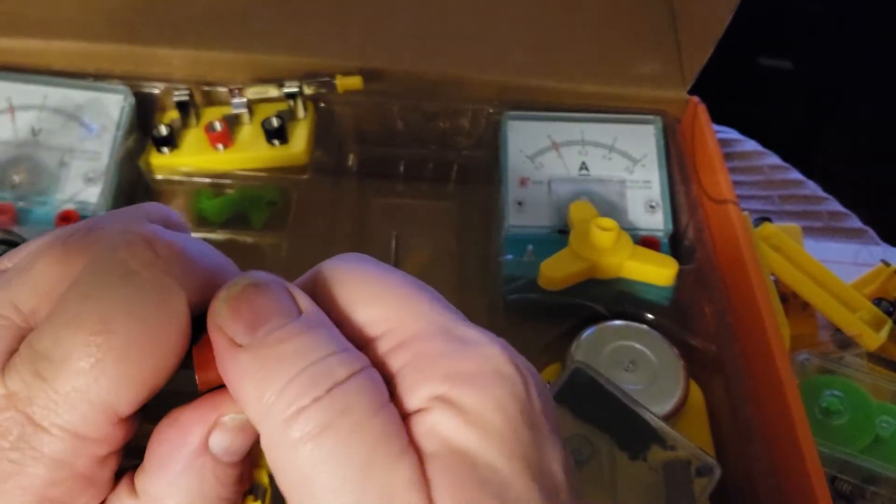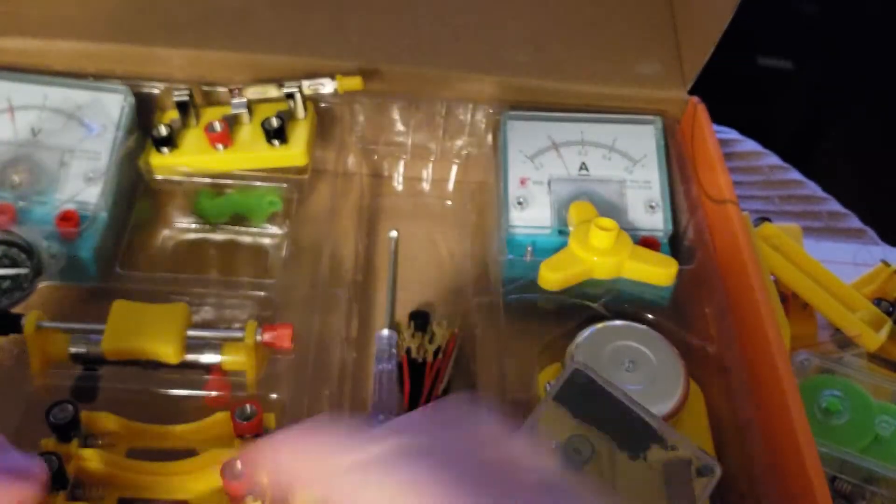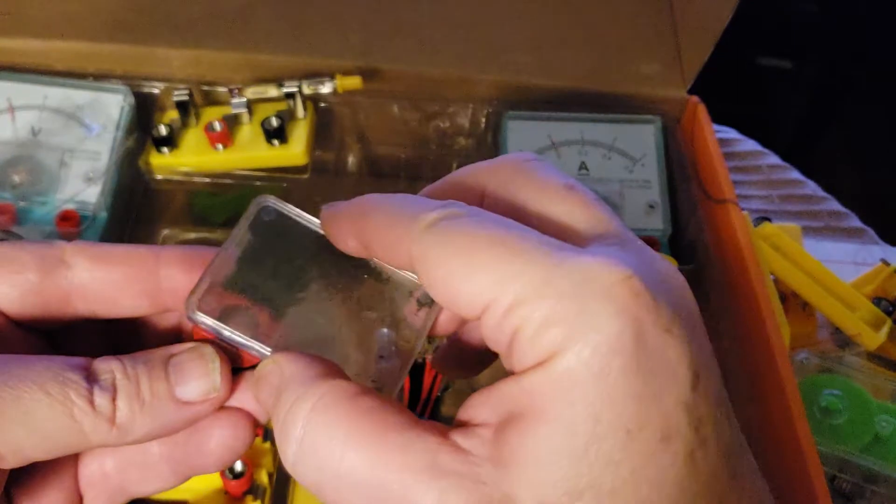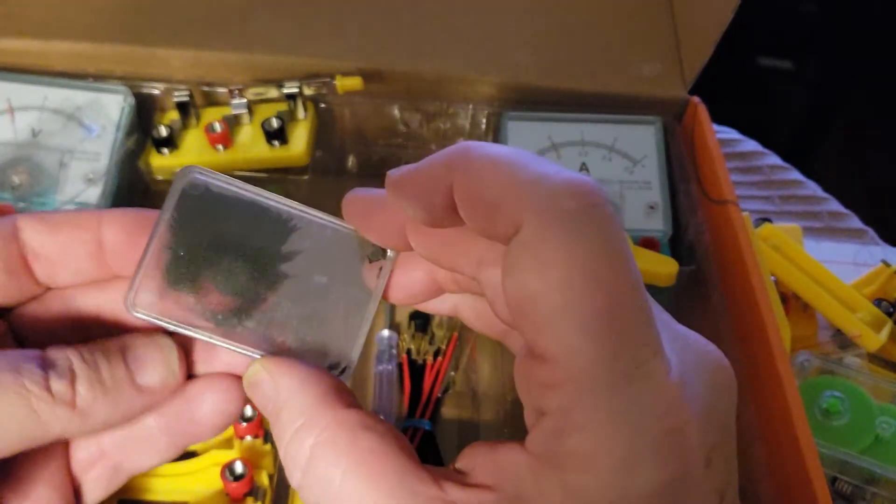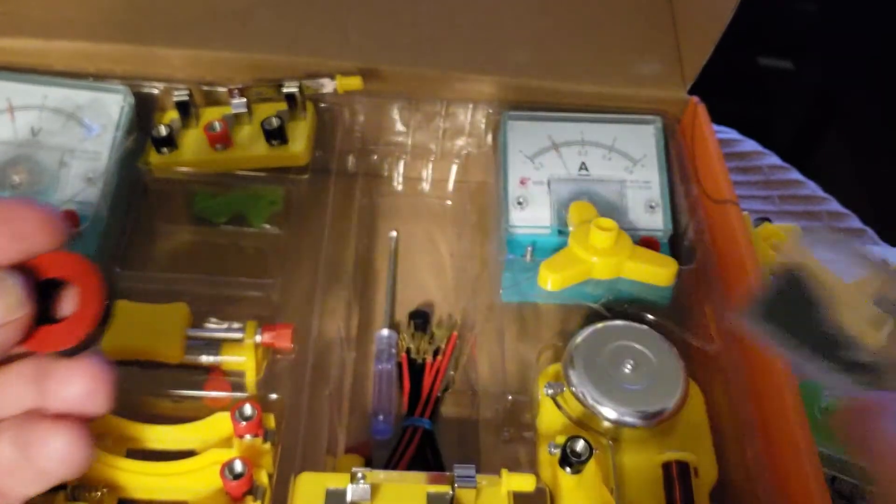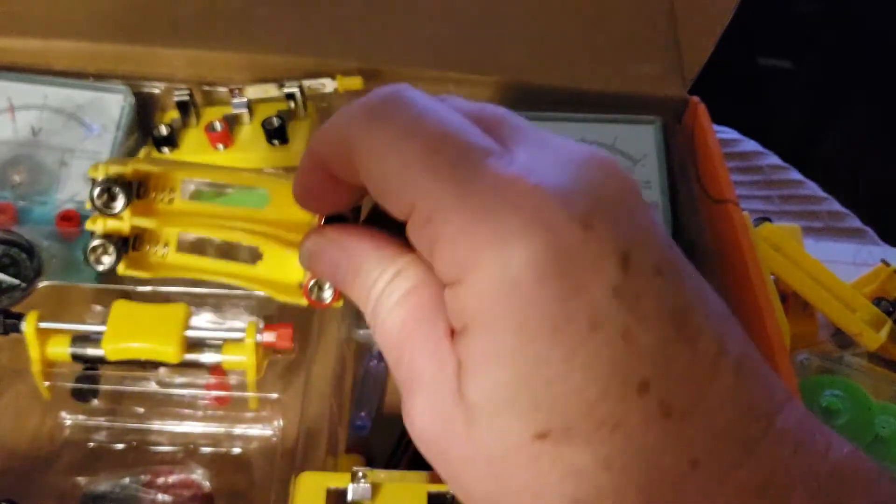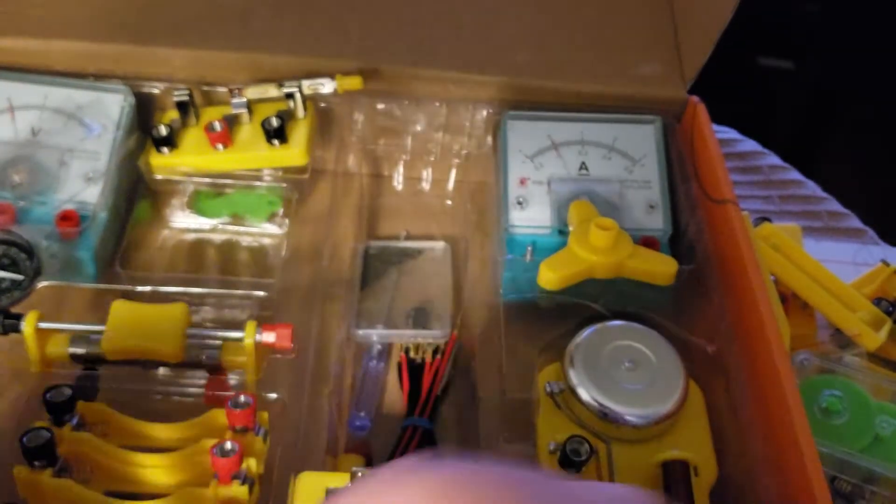They're not neodymium but they're fairly strong. They're good for the iron filings anyway. You can look at the field lines. And then some battery connectors so you can hook up your power supply.